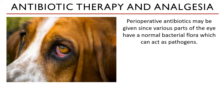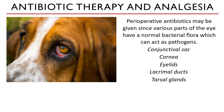Perioperative antibiotics may be given since various parts of the eye have a normal bacterial flora, which can act as pathogens if their environment becomes conducive for microbial growth. Examples of these include the conjunctival sac, the cornea, the eyelids (both upper and lower), the lacrimal ducts, and the tarsal glands. What is the other term for tarsal glands, and where are they located? Write your answer in the comment section.